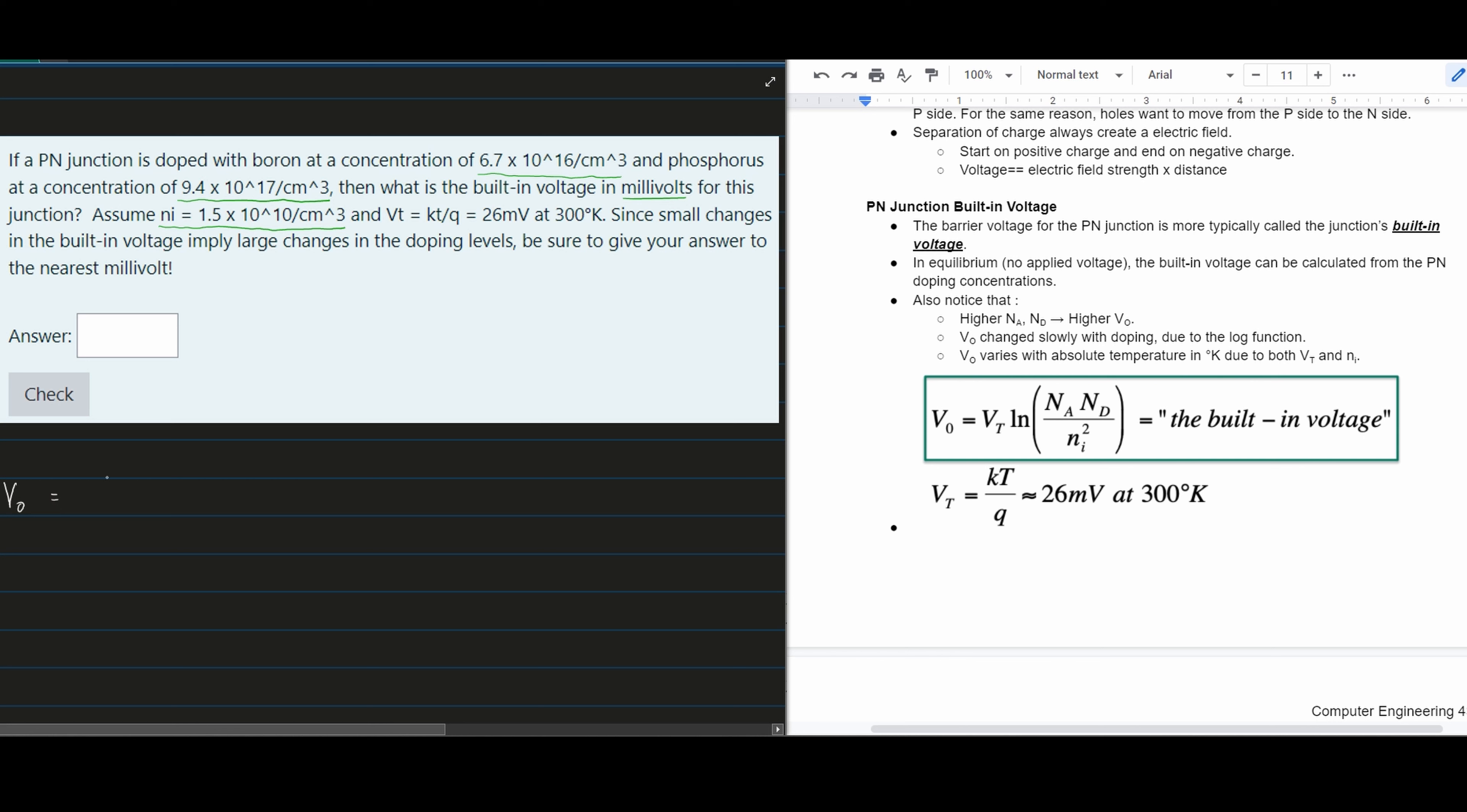Vt equals Kt/Q, which is given as 26 millivolts at 300K. This equals 26×10⁻³ volts, converting from millivolts.